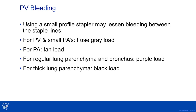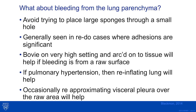What about bleeding from the lung parenchyma? Avoid trying to place large sponges through a small hole — generally seen in redo cases where adhesions are significant. Bovie on a very high setting and arcing to tissue will help if bleeding is from the raw surface. If pulmonary hypertension is present, reinflating the lung sometimes helps as this lowers pulmonary artery pressure. Occasionally, re-approximating visceral pleura over the raw area will also help.